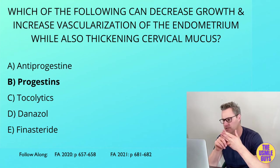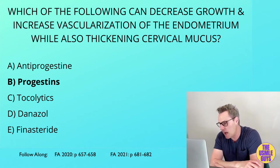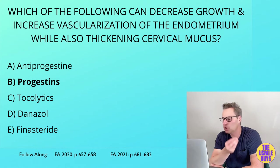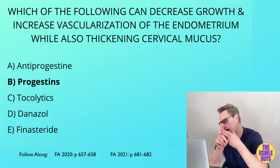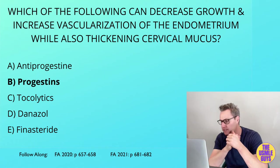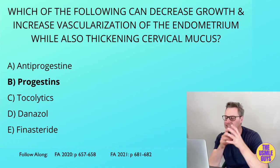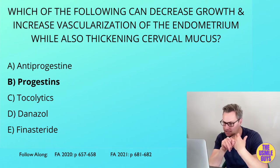Combined contraceptives are contraindicated in anyone over 35 who smokes tobacco, or who has a risk of cardiovascular disease, history of migraines, breast cancer, or liver disease. Copper IUDs don't contain medications; instead, they produce a local inflammatory reaction that is toxic to both the ova and sperm, preventing fertilization. They are associated with dysmenorrhea and are contraindicated in those with an active case of PID, as they could prevent it from resolving.